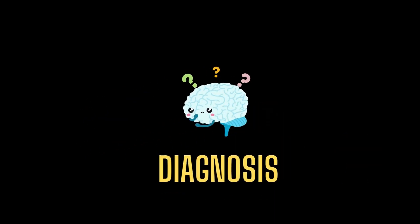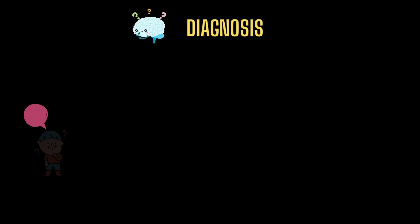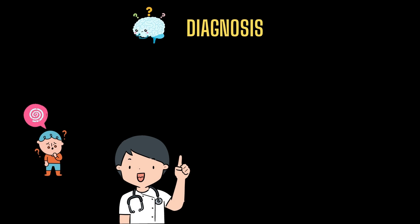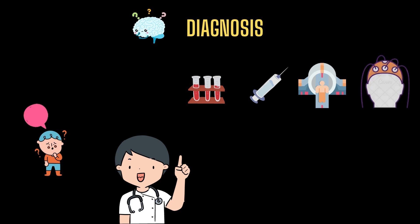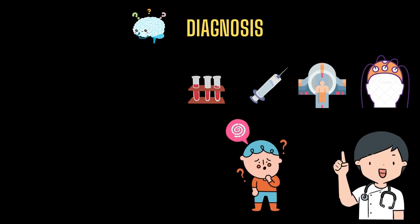If someone has encephalopathy symptoms, they should consult a doctor right away. The doctor may employ the following methods to rule out a diagnosis: blood tests, a spinal fluid examination, imaging procedures such as MRI or CT scans, and electroencephalograms — a way of monitoring the electrical activity of the brain. The results of these tests will assist the doctor in determining what form of encephalopathy a person has and what the underlying reason is.